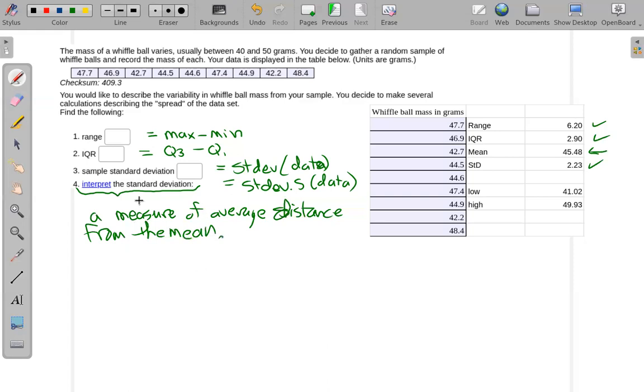So given its definition, you can't state what the standard deviation means without using the mean because it's a measure of distance from the mean on average. So I need both of those numbers here.